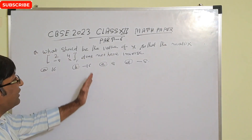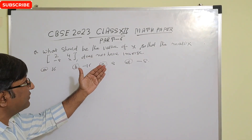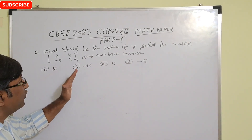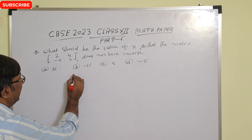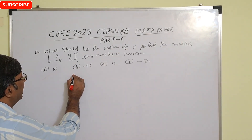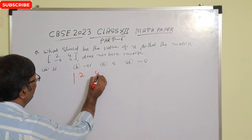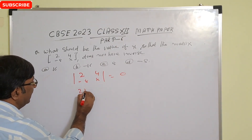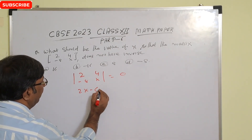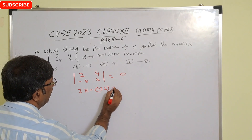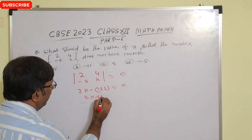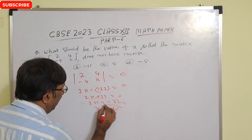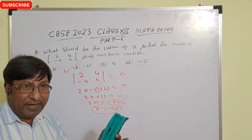What should be the value of x so that the matrix does not have an inverse? We know any matrix has no inverse when its determinant equals 0. Setting the determinant of the matrix with entries 2, 4, -8, x equal to 0: we get 2x plus 32 equals 0, so 2x equals -32, giving x equals -16. Therefore option B is the correct answer.